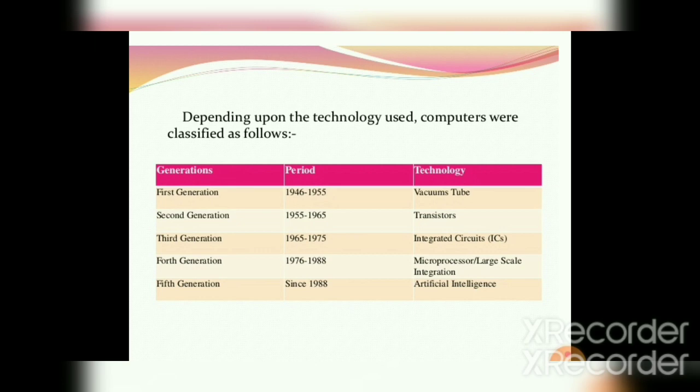The fourth generation of computers is from 1976 to 1988, with large scale integration and microprocessors as the main components. The fifth generation is from 1988 and development is still ongoing, with the basic technology being artificial intelligence, in short called AI.